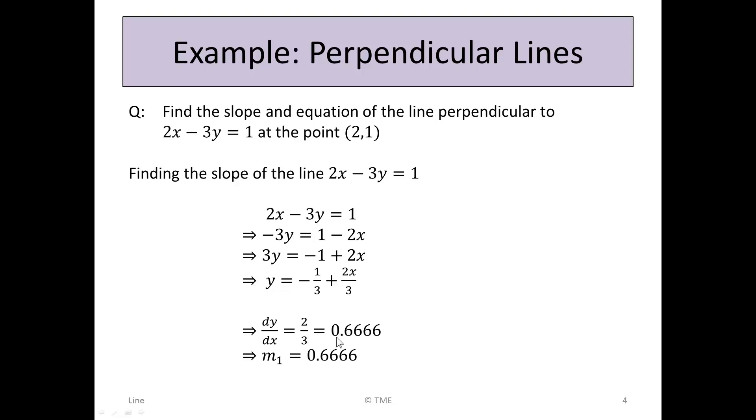So dy/dx is 2/3, or 0.666. And dy/dx is the slope, same as m₁, the slope of line 1. So m₁ = 0.6666, and we'll hold it for later substitution.